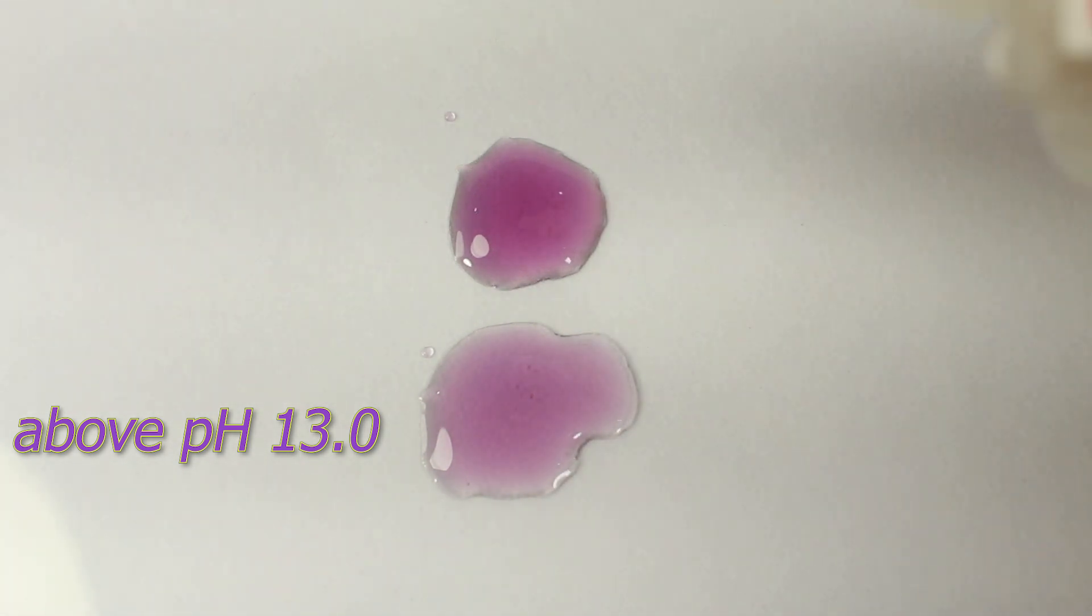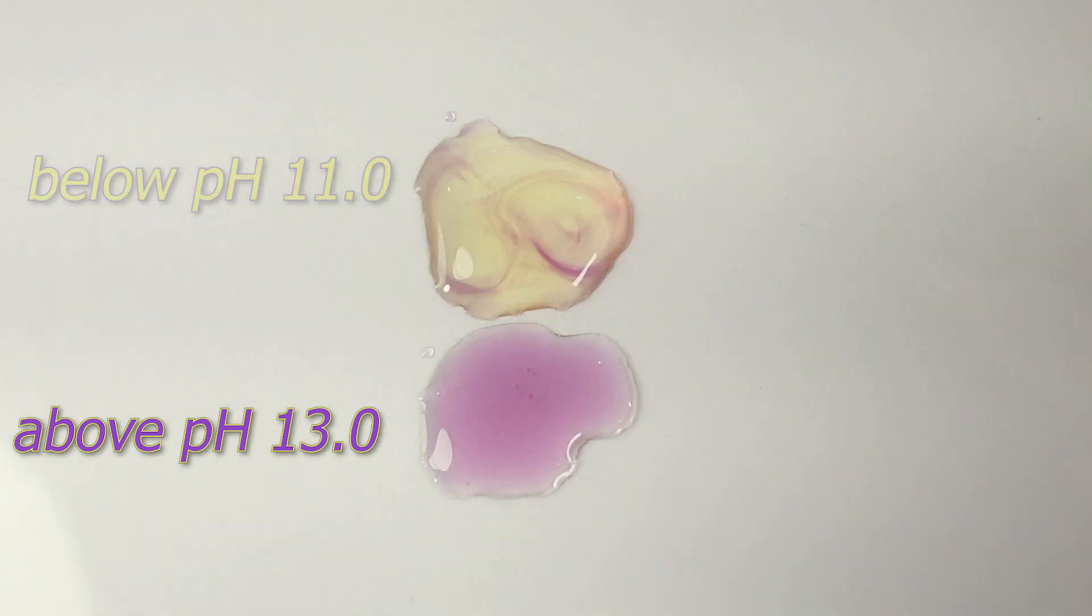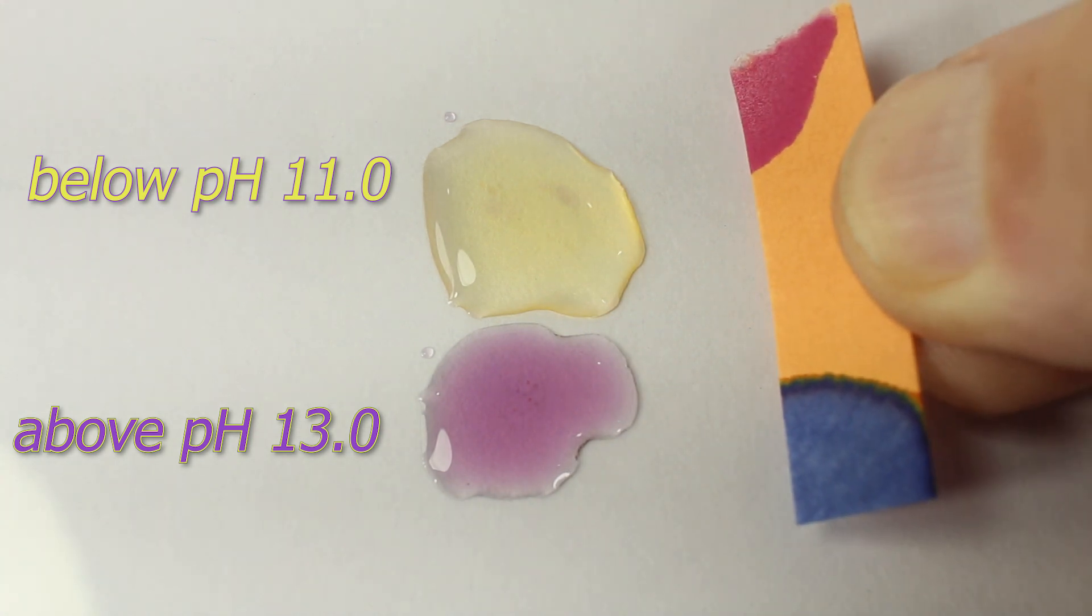What happens if I change the pH by adding some sulfuric acid? It turns yellow. Actually yellow is the color of this at any pH below 11. It can be used as a pH indicator also.